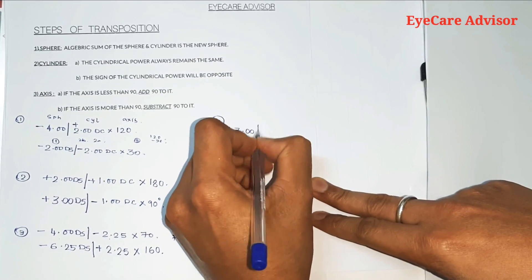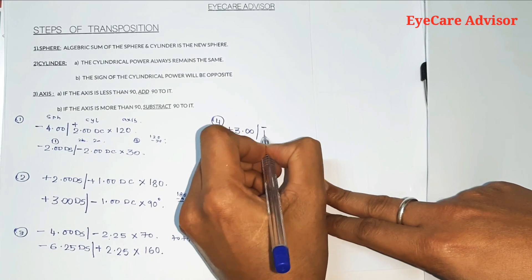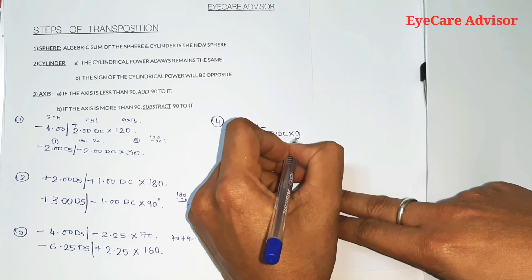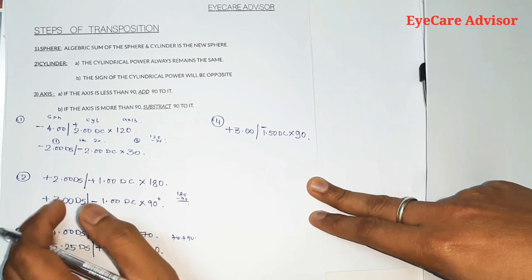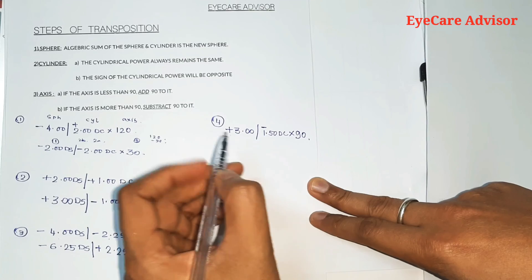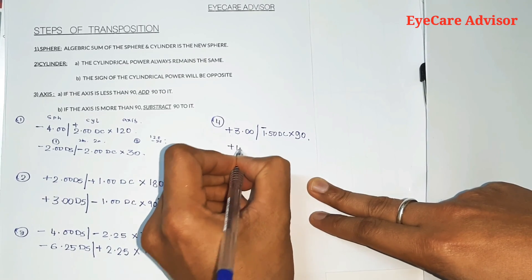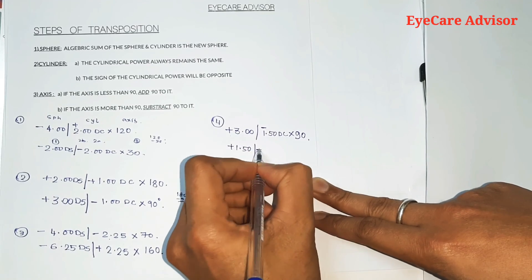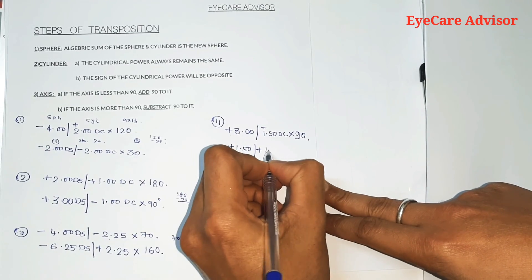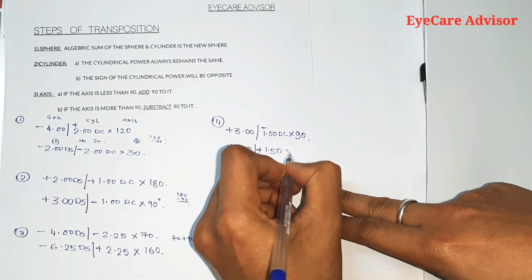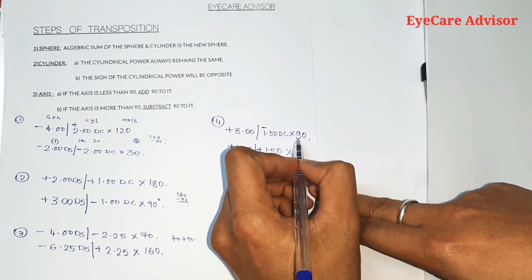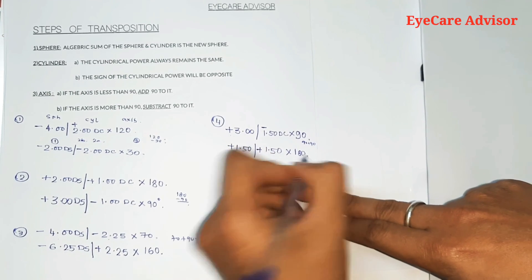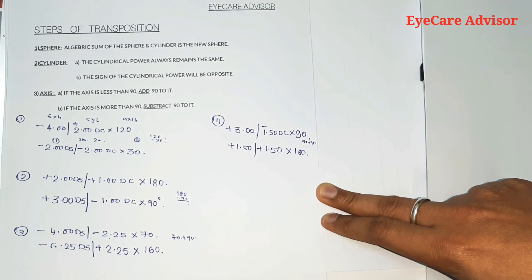Example 4: plus 3 diopters spherical with minus 1.50 diopters cylindrical, axis 90 degrees. Step one — algebraic sum: plus 3 minus 1.50 equals plus 1.50 diopters spherical. Step two — sign will be opposite, so make it plus; cylindrical power remains the same at 1.50. Step three — axis is exactly 90, so add 90: 90 plus 90 equals 180 degrees. Result: plus 1.50 spherical, plus 1.50 cylindrical, axis 180 degrees.